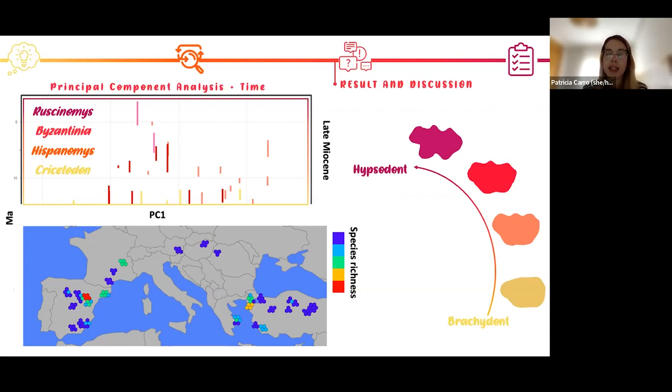So we think that this change in the outline morphology could be related with a change in the environmental conditions, because we have humid conditions during the early and middle Miocene in most of these fossil sites. But during the late Miocene, these conditions became drier, and these hamsters present higher crowns, higher height crowns than brachiodont molars.